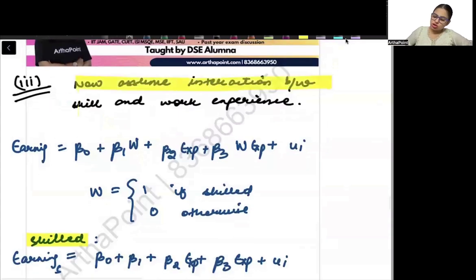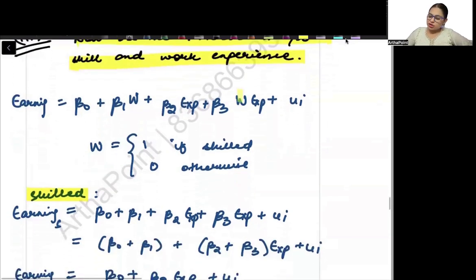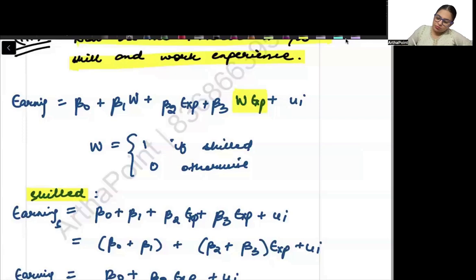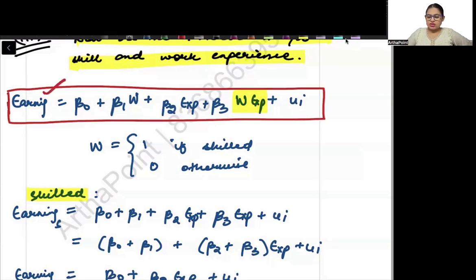Now it says: assume an interaction between skill and work experience. So I have included an interaction dummy, which is worker multiplied by experience. My model now becomes: earning equals beta 0 plus beta 1 W plus beta 2 experience plus beta 3 W into experience plus UI.